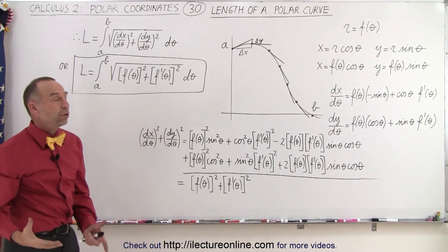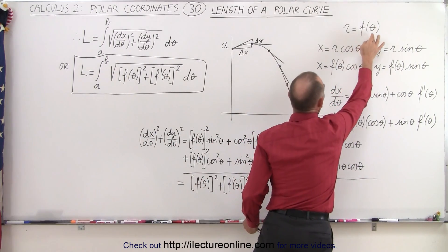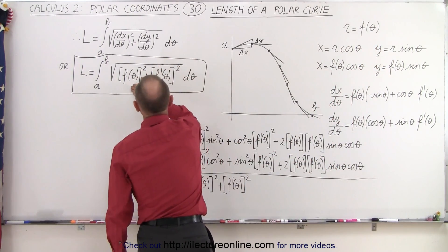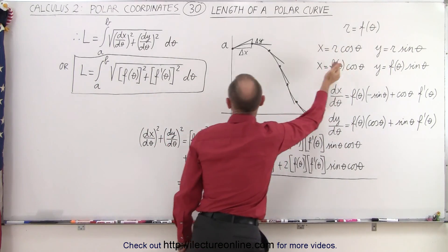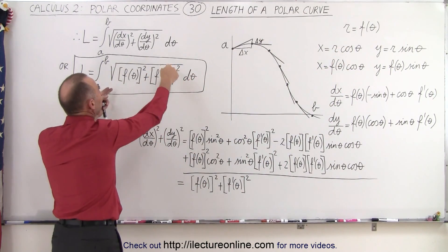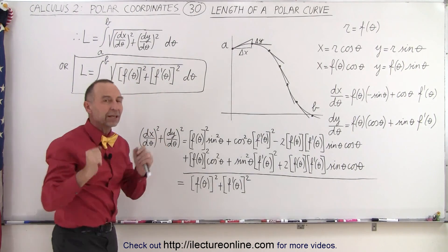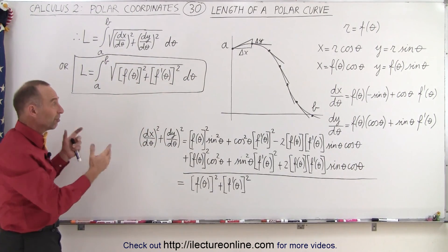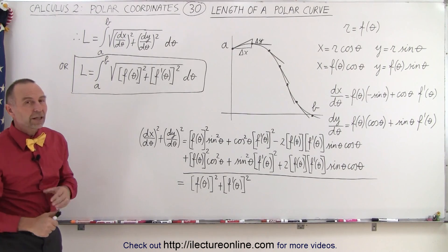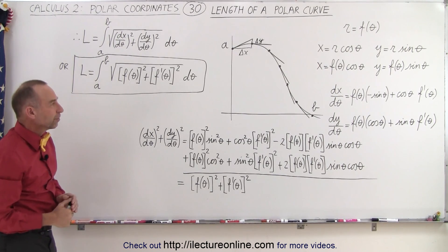All you have to do is know your function r = f(θ), square it, find the derivative of the function, square that, add them together under the radical times dθ, integrate, and you have the length of the curve. It's a very straightforward equation. Now let's look at some examples of how to actually apply this.